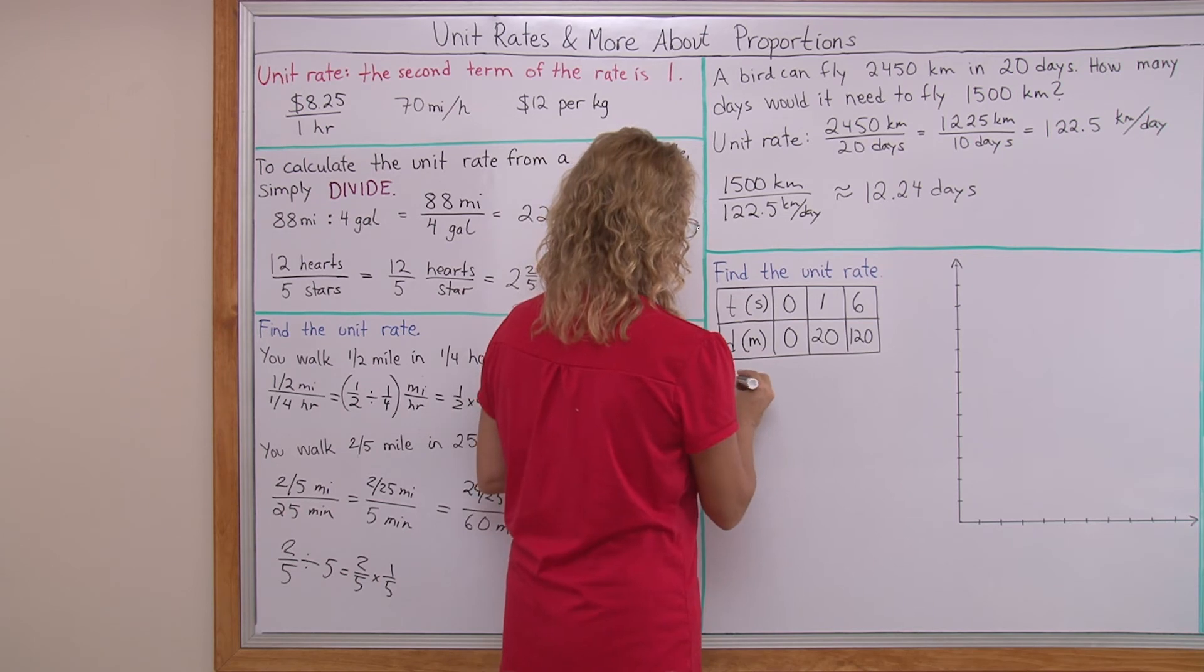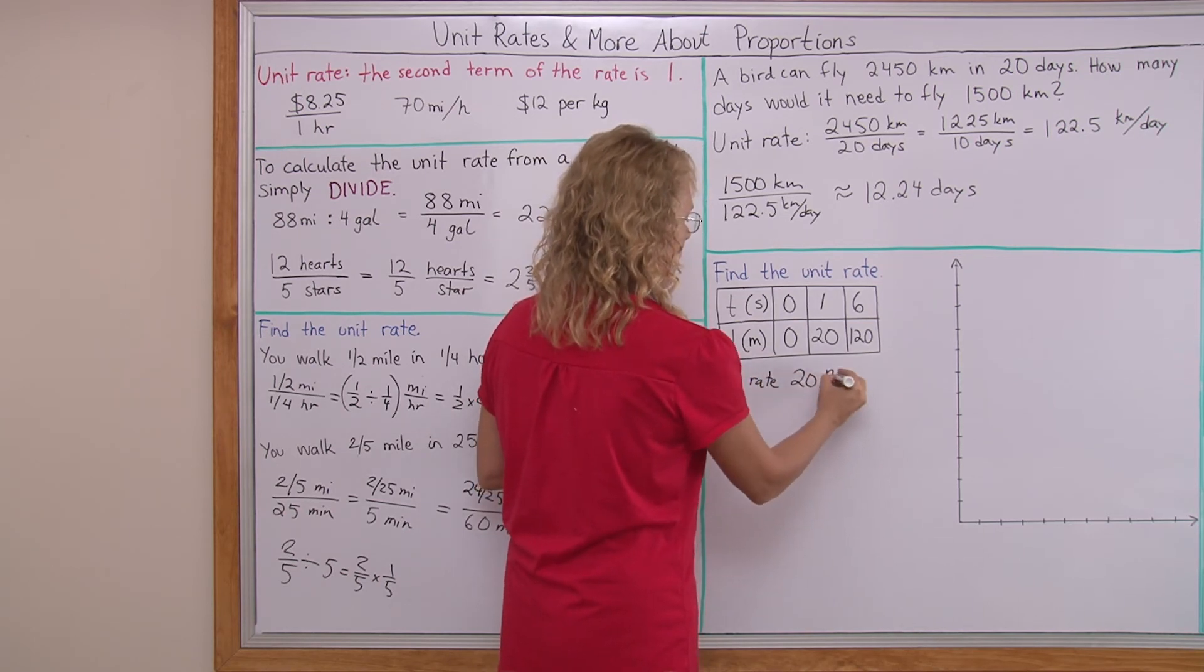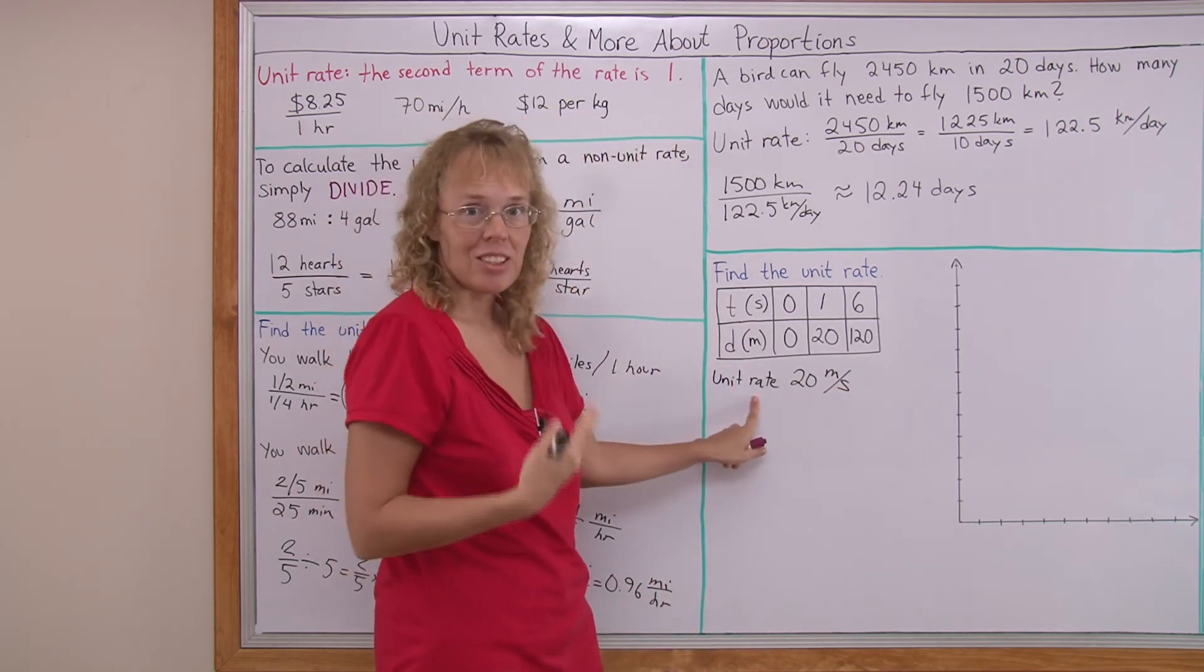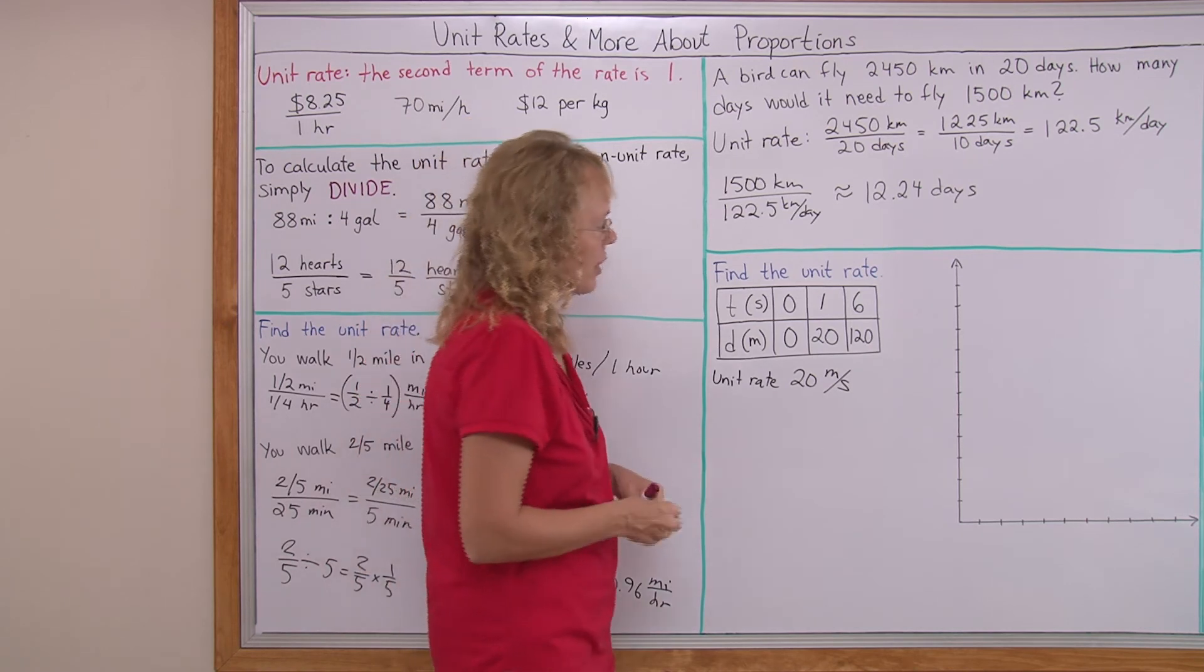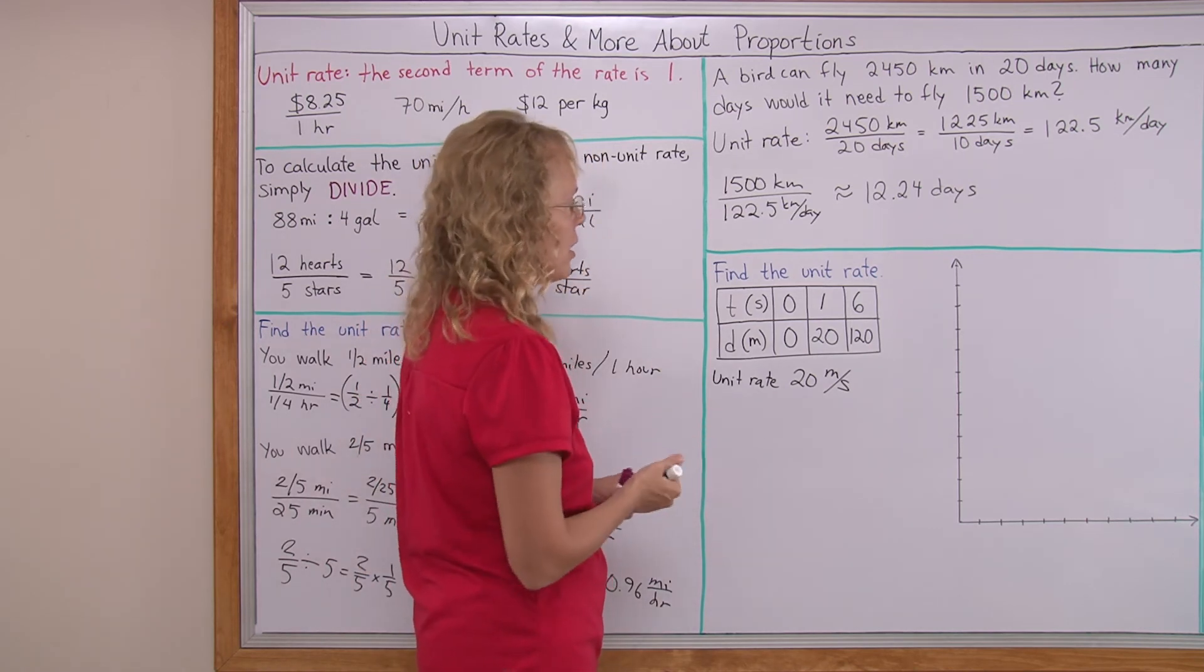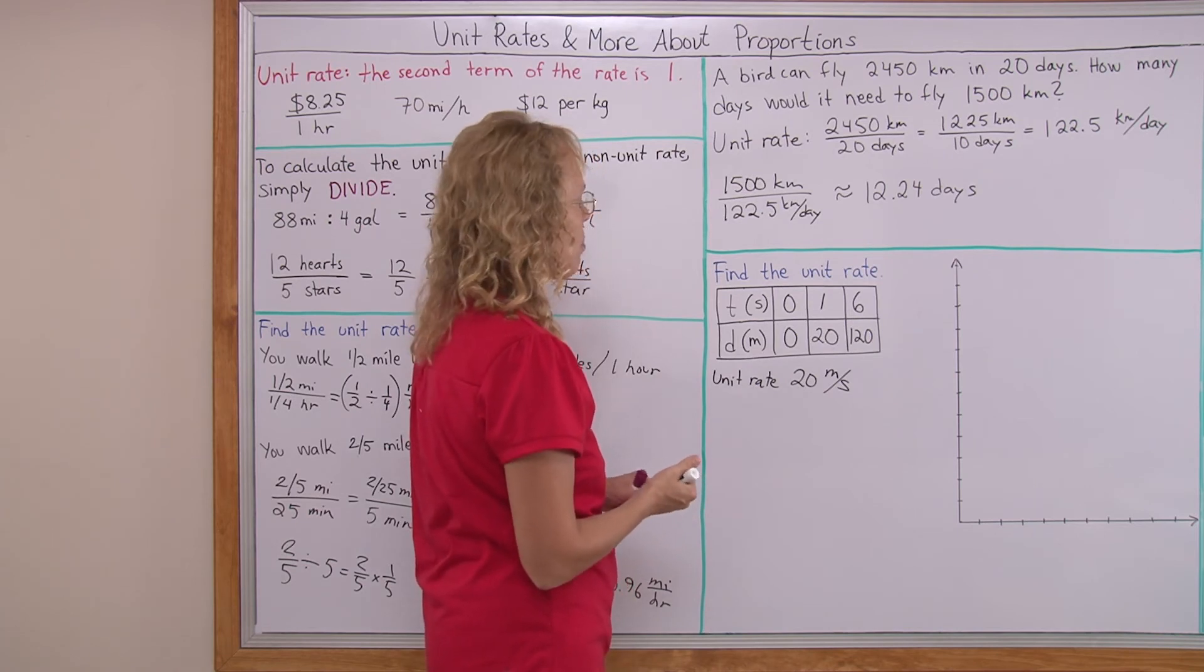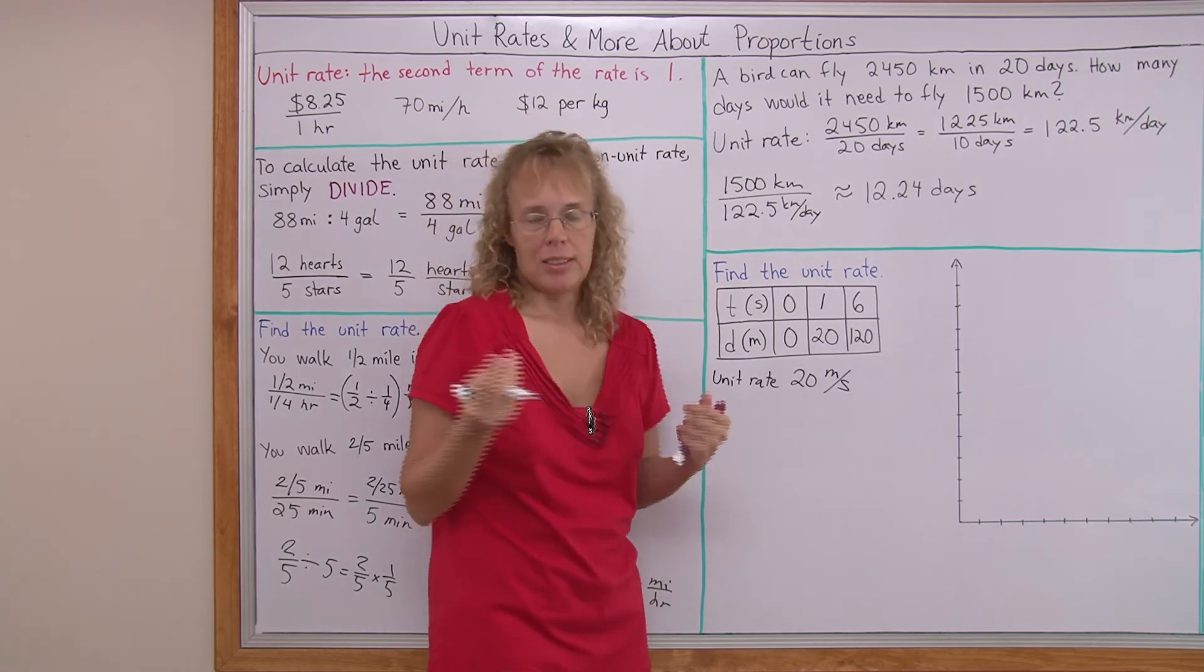The unit rate is 20 meters per second. It's a speed. Speed is the type of rate.